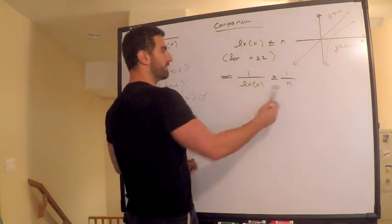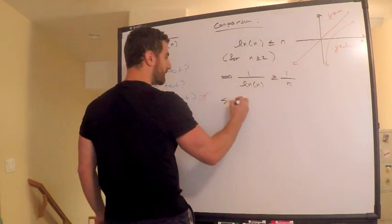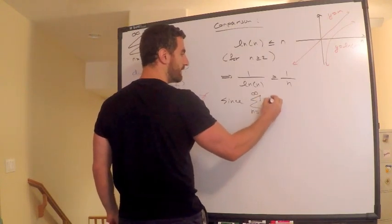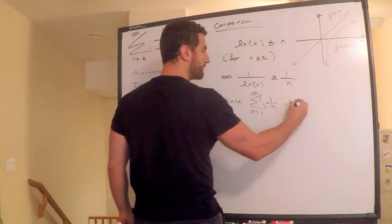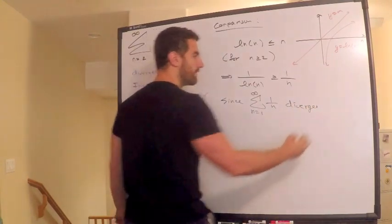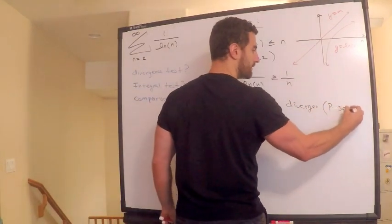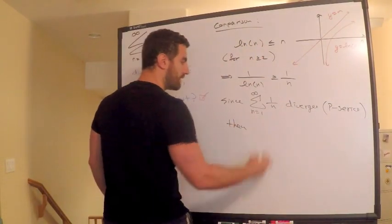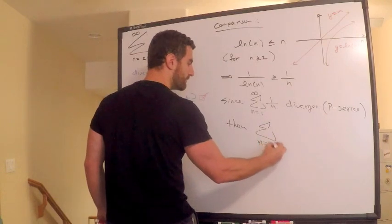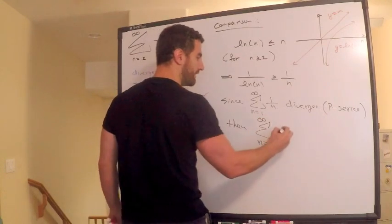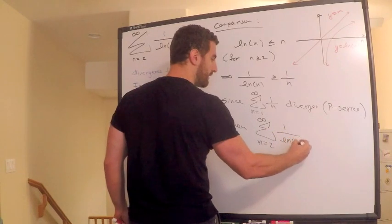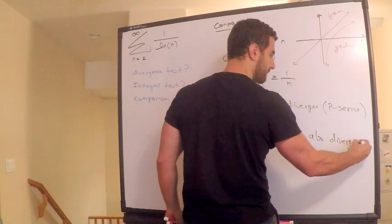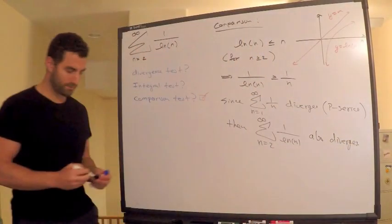Because I know something about 1 over n. So since the infinite series n equals 1 to infinity of 1 over n diverges p series, then the sum from n equals 2 to infinity of 1 over ln of n also diverges. So that takes care of that.